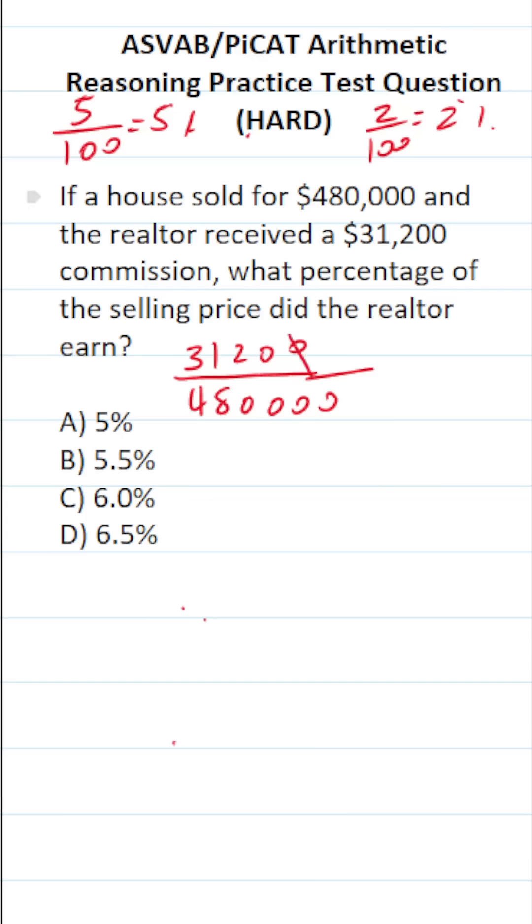Let's start reducing this one by crossing out corresponding zeros accordingly. This becomes 312 over 4,800.